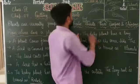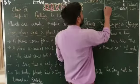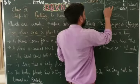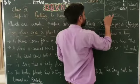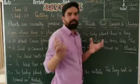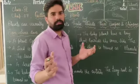Stem की बात करें तो कुछ plants में stem छोटा होता है, soft होता है, और green होता है।